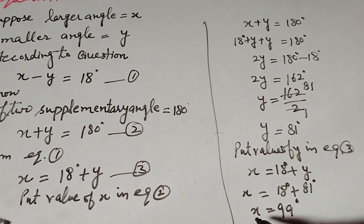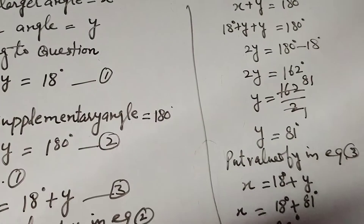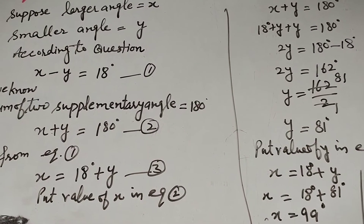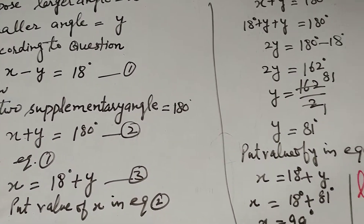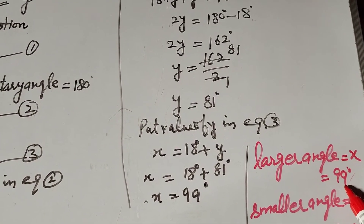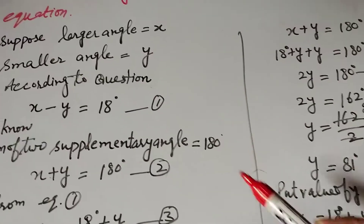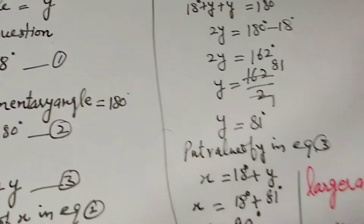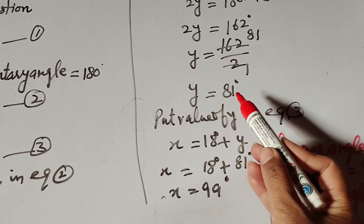So the larger angle x equals 99 degrees, and the smaller angle y equals 81 degrees.